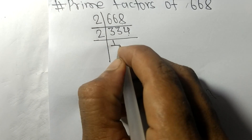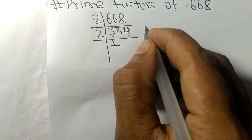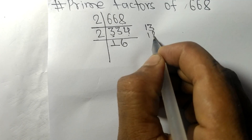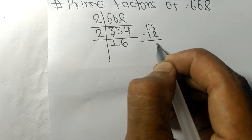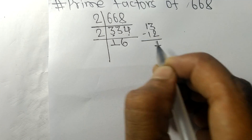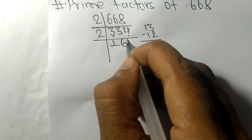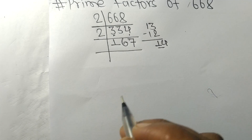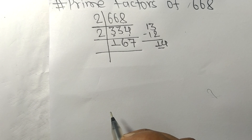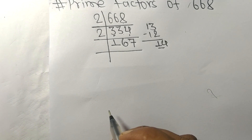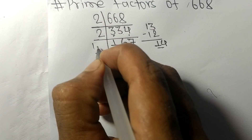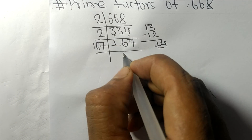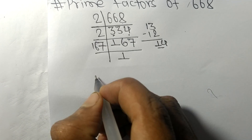2 times 1 means 2, remainder 1. Then 13: 2 times 6 means 12, remainder 1. And 14: 2 times 7 means 14. Now we get 167, which is a prime number, so it is divisible by 167 itself, and we get remainder 1.